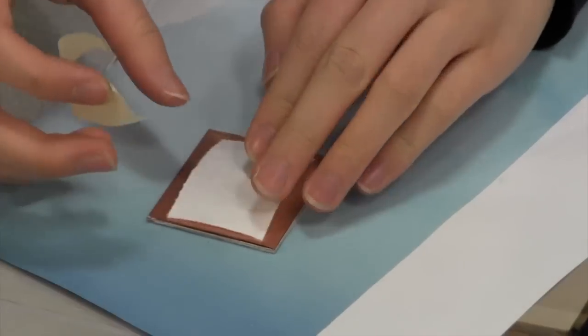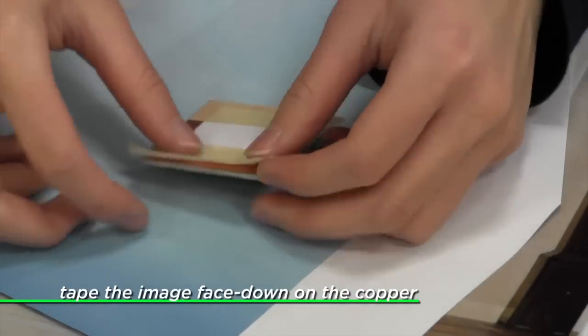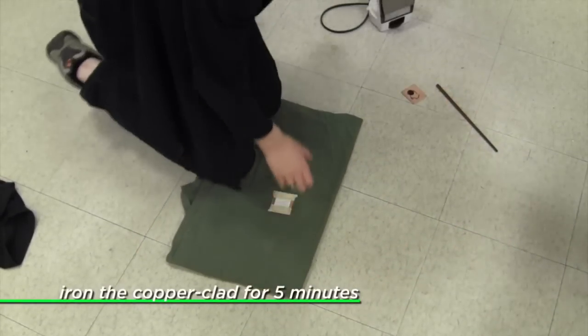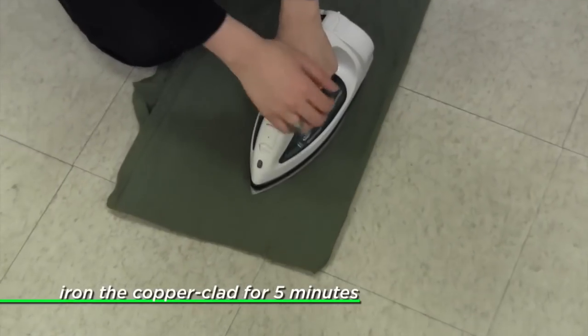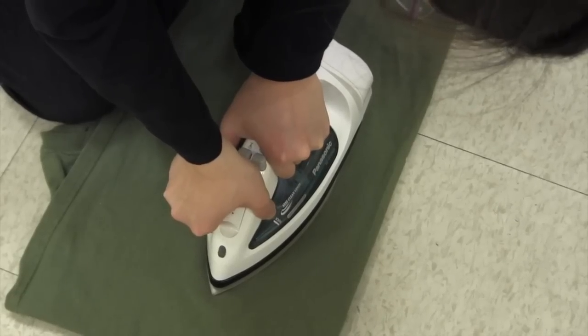To get the image that we want on the board, we tape the paper to the copper board so that the toner is touching the copper. Then, we set a clothes iron to its highest temperature, and we press down on the board as hard as we can for about 5 minutes. When we heat the board with the paper circuit, the plastic in the toner will melt and stick to the copper.